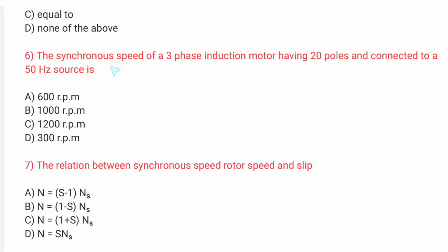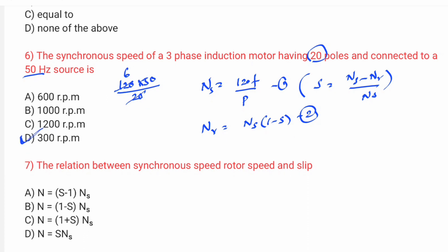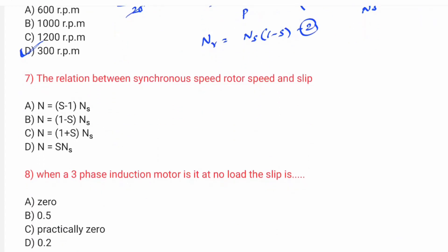Next standard question: the synchronous speed of a three-phase induction motor having 20 poles connected to 50 Hz supply. The formula is Ns = 120 × f / P. Also the rotor speed formula is Nr = Ns × (1 − s), and slip s = (Ns − Nr) / Ns. These are the key formulas.